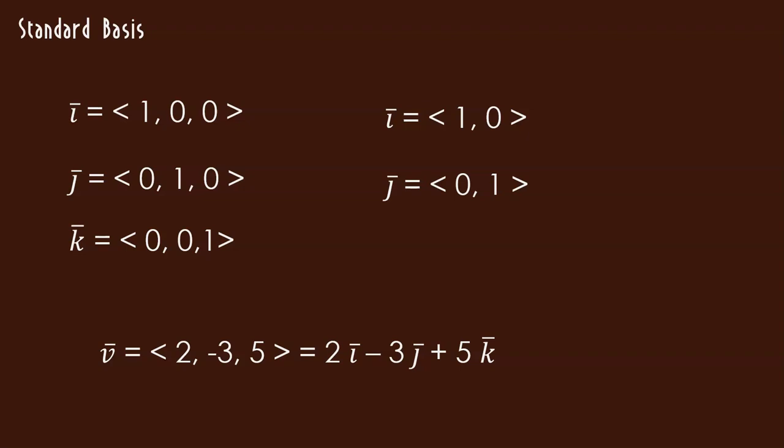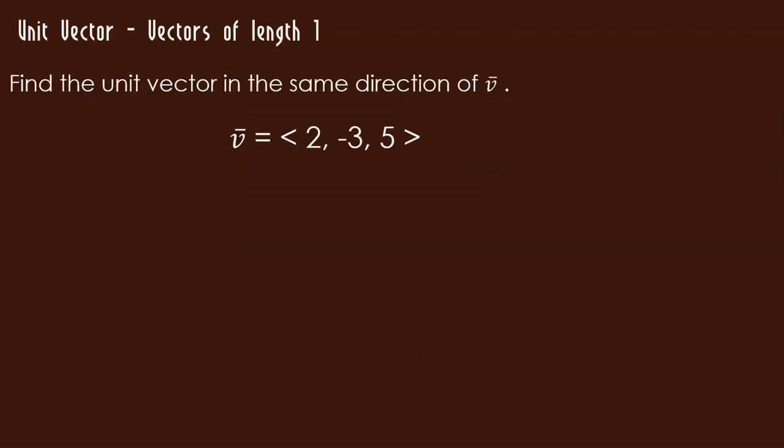Sometimes, though, we want the length of our vector. But sometimes we want our vector to be of length 1. I just want to keep the direction, but I still want the vector to be of length 1. How do we do this? So these are called unit vectors. So suppose I have the vector 2, negative 3, 5. And I want to find a unit vector in the same direction as v. Well, this is pretty straightforward.